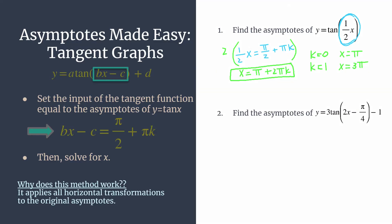We still apply the same method, we find all of the horizontal transformations or the input of the tangent function. So in this case, that's two x minus pi over four. And we're going to set that equal to the parent asymptotes pi over two plus pi k, where k is an integer.